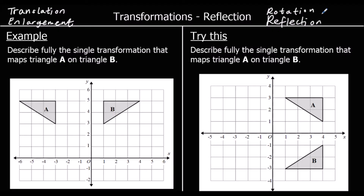In these questions, we're looking at reflections. The first question says: describe fully the single transformation that maps triangle A onto triangle B. To get from triangle A to triangle B, we can reflect it. The mirror line is exactly halfway between the two shapes.